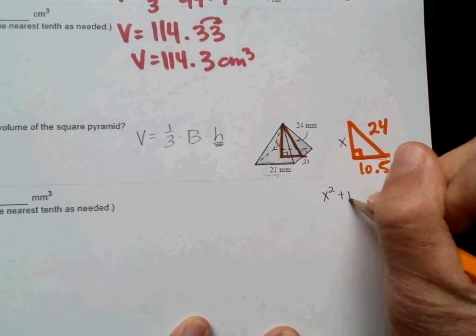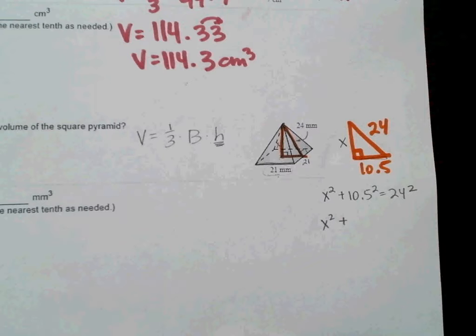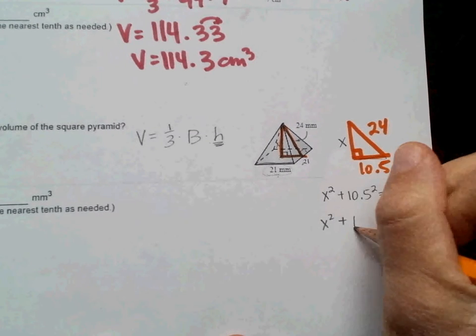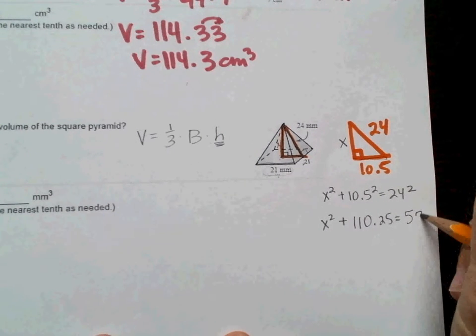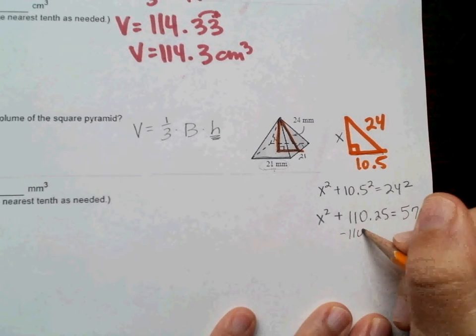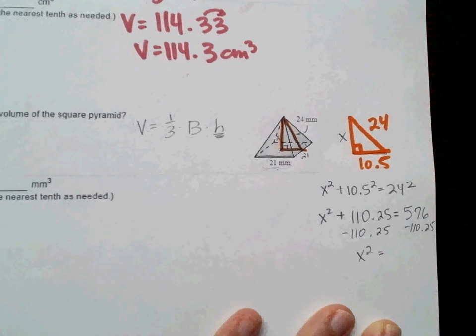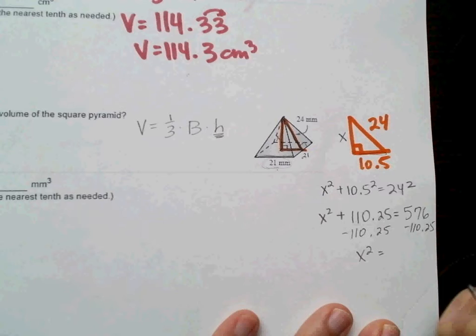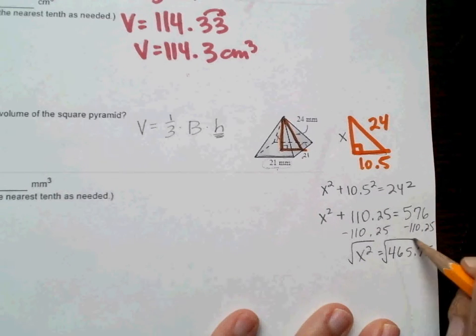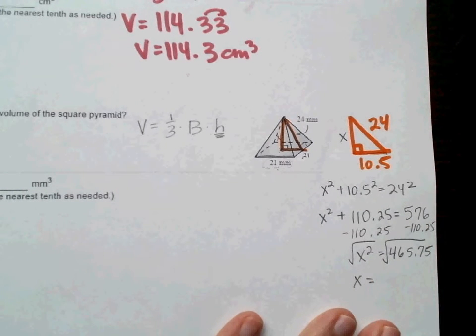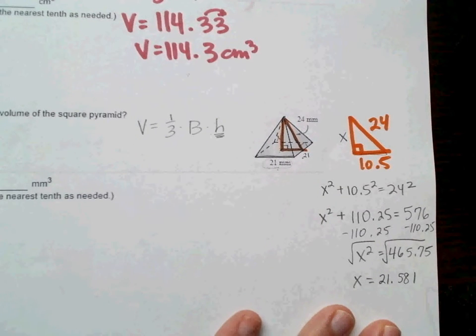So, this is a little Pythagorean theorem over to the side. x squared plus 10.5 squared equals 24 squared. So, x squared plus 10.5 squared is 110.25, and 24 squared is 576, and then I would minus 110.25. So, x squared is equal to 576 minus 110.25, so that gives us 465.75, and then I would take the square root of each of those pieces. So, the square root of that would give us 21.581.